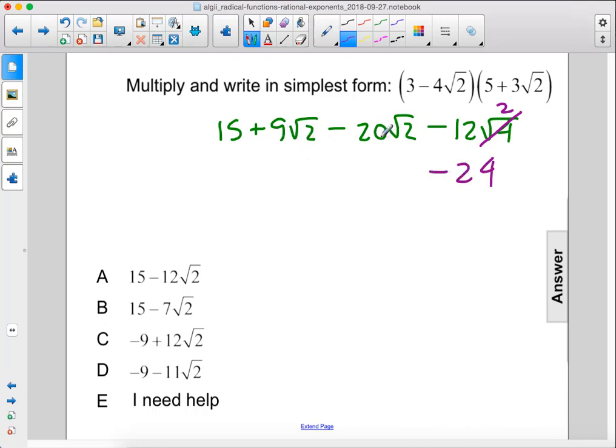And these are like terms here. 9 minus 20 is going to give us negative 11, so negative 11 times the square root of 2, and then we still have that 15. 15 minus 24 is going to give us negative 9, then minus 11 times the square root of 2. The answer is D.